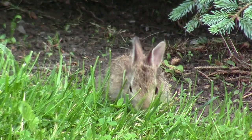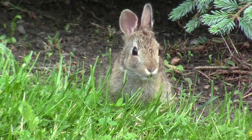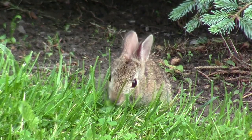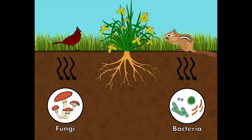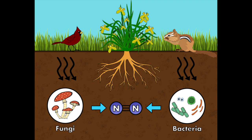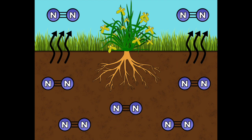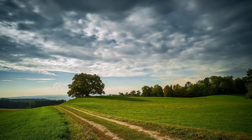Animals benefit from the nitrogen compounds by eating the plants and getting the necessary nutrients in the process. In the final stages of the nitrogen cycle, certain other fungi and bacteria in the soil act as decomposers. They feed on both dead plant matter and animal excrement, consuming most of the nutrients, but leaving behind free atoms of nitrogen. These atoms then bond together to form stable N2 molecules once again, which then outgas into the air, starting the nitrogen cycle anew.